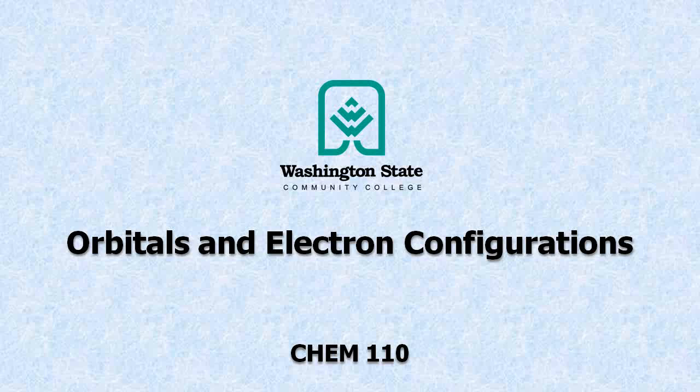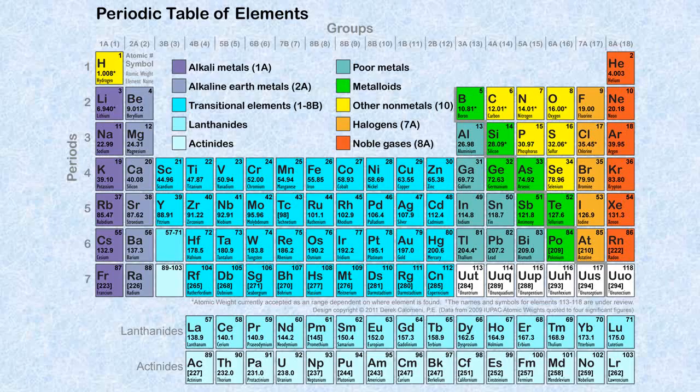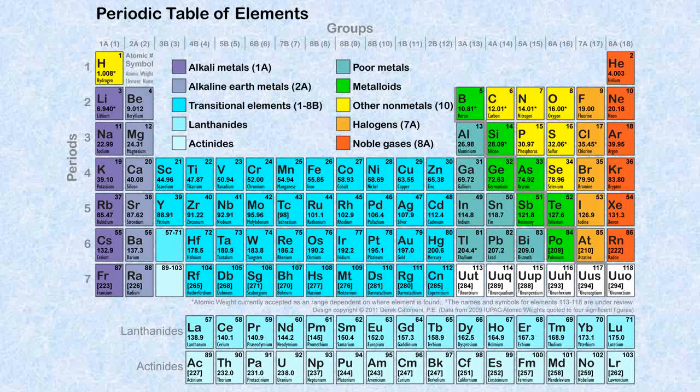This screencast is on orbitals and electron configurations. At the end of the screencast you should be able to predict electron configurations and how many electrons are in the outer valence shell of an element. Here's your periodic table that we like to use. Please have one of these available for this screencast.